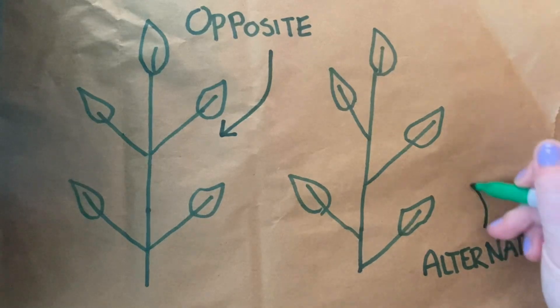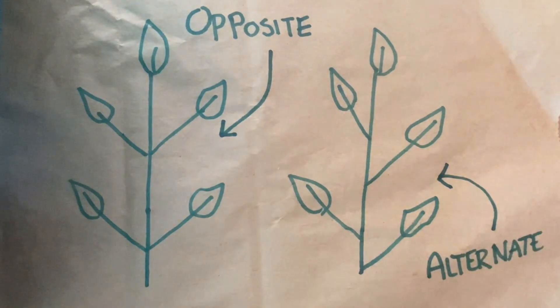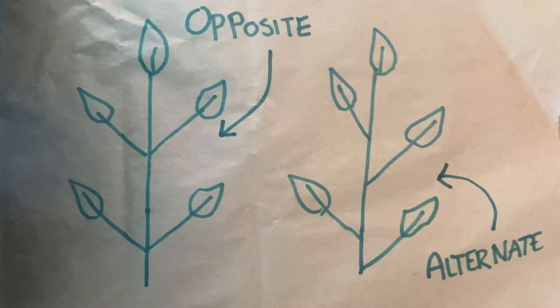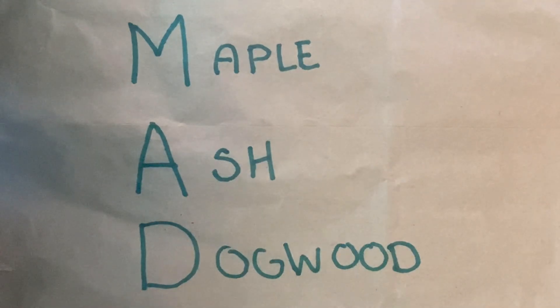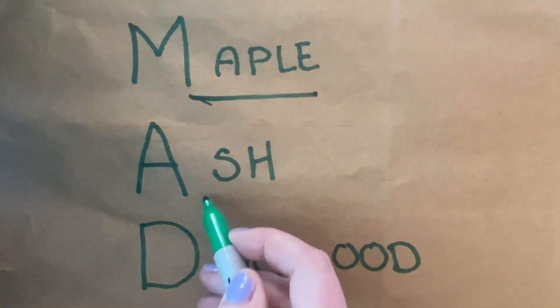Branches and twigs can grow in opposite or alternate patterns, but there are only a few that grow opposite. The common opposite-growing trees in Maine are maples, ashes, and dogwoods.